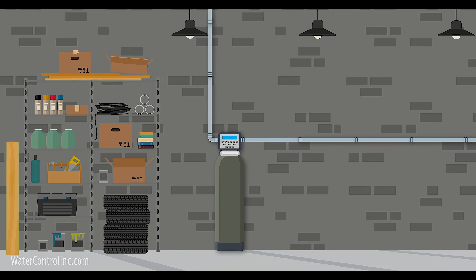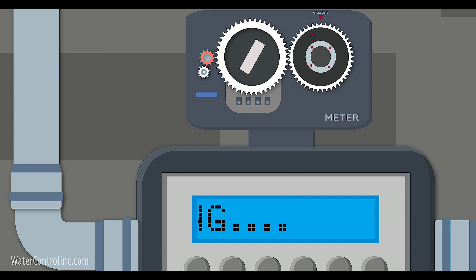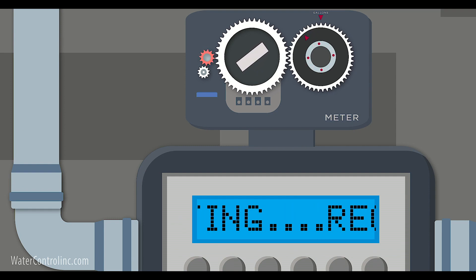Number one, most important, update your water softener to a system with a water meter, if you don't already have one. It will count the gallons of water treated and initiate regeneration only when needed.